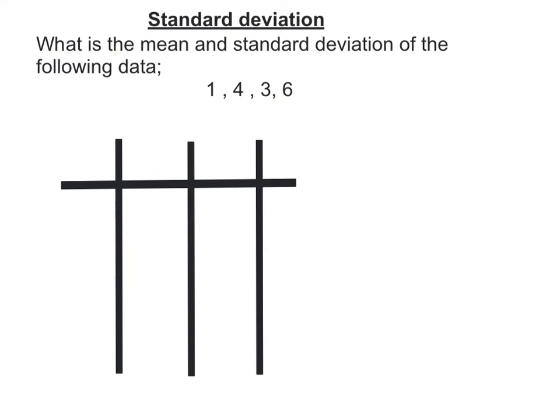Alright, here's the second question. First, let's work out the mean of this data — that's x̄. I add them up: 1 plus 4 plus 3 plus 6 gives 14. There are 4 data points, so 14 over 4 gives a mean of 3.5.